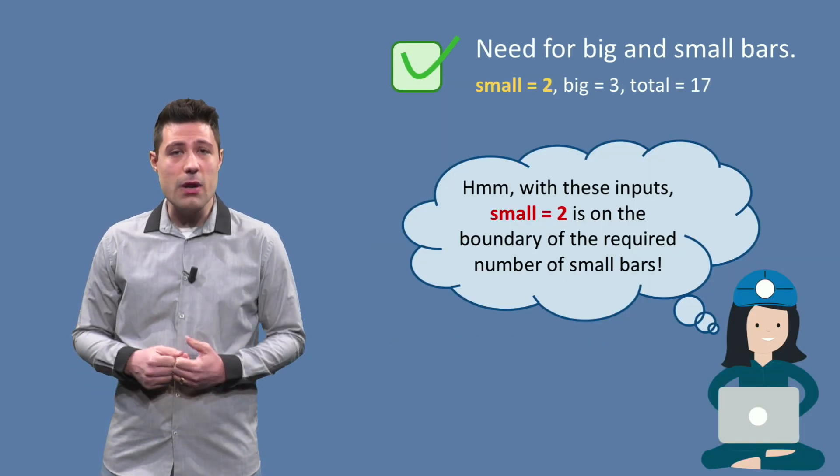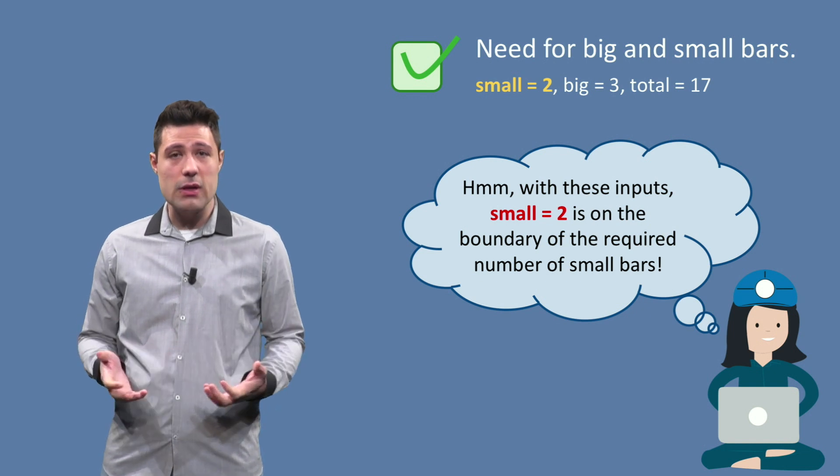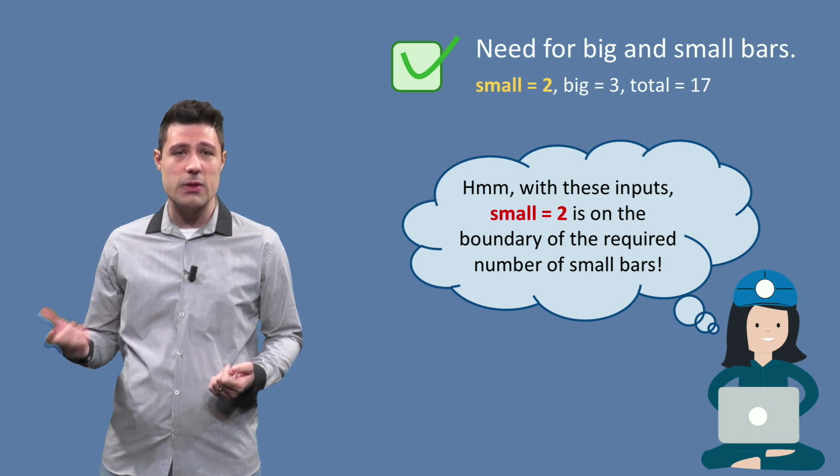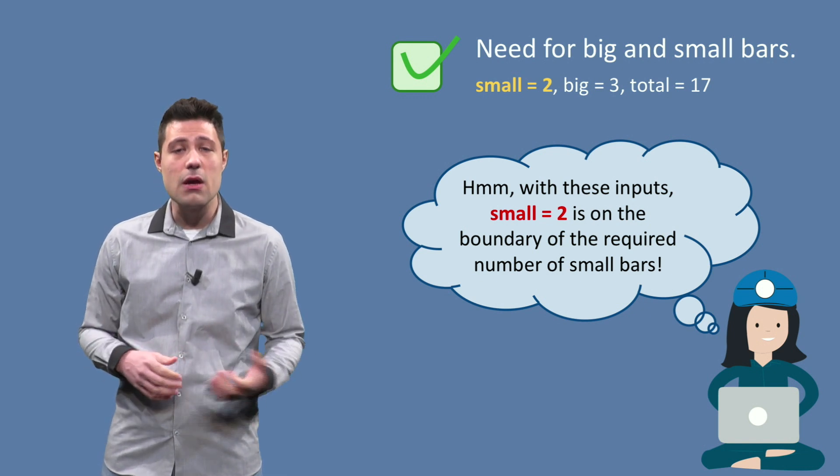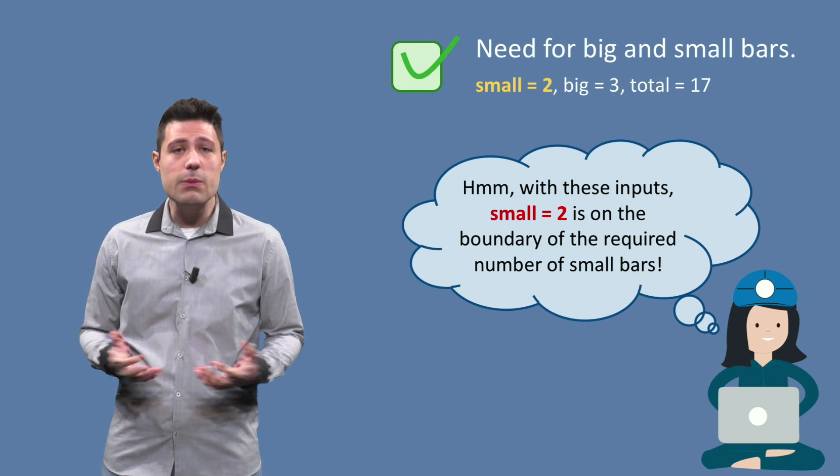This means we have thought about this partition, but apparently the instance we used to represent this partition, small 5, big 3, total 17, was not enough. We need more tests.